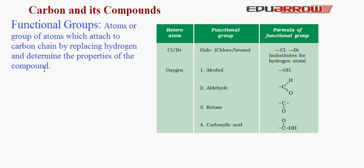Some functional groups are given as a chart. Number 1 is Halogens. Halogens include Chlorine, Bromine, Iodine, etc. The formula of these groups are represented here: Cl, Br.